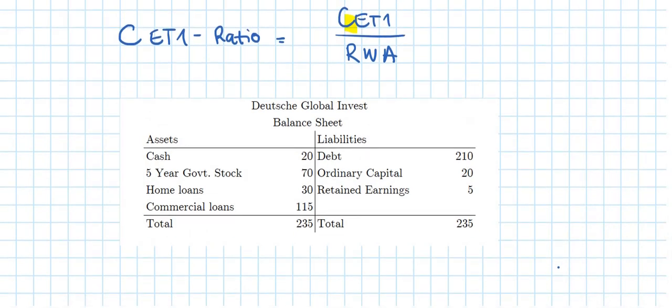And CET1 stands for Core Equity Tier 1. And Core Equity Tier 1 has just some components of the equity position of a balance sheet. And they are just defined. It is really complex, but to make it simple, ordinary capital and retained earnings are part of Core Equity Tier 1. Debt is, of course, not a part of Core Equity Tier 1, because debt is not equity.